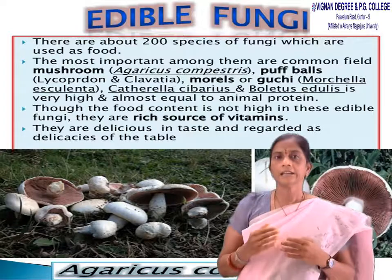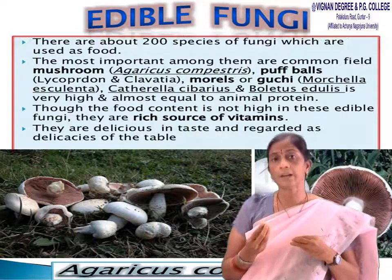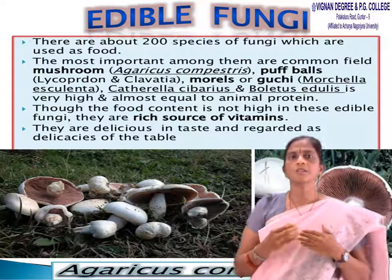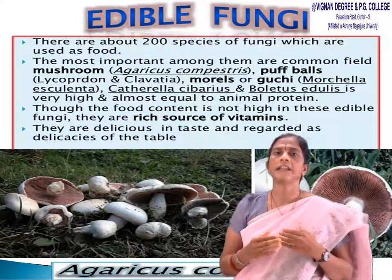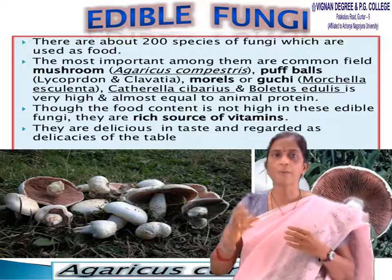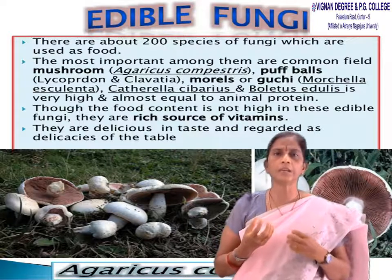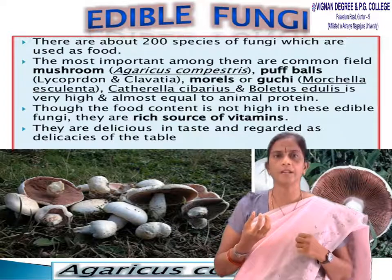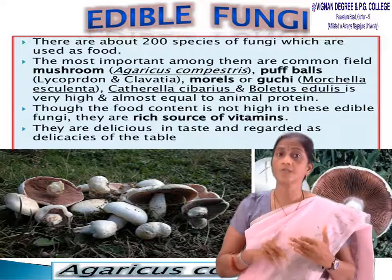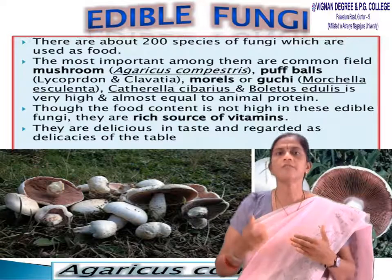Coming to edible fungi — there are about 200 species of fungi used as food. The most important include mushrooms, Agaricus, and puffballs. They are highly proteinous food materials and a high source of vitamins. They are also regarded as a delicacy.